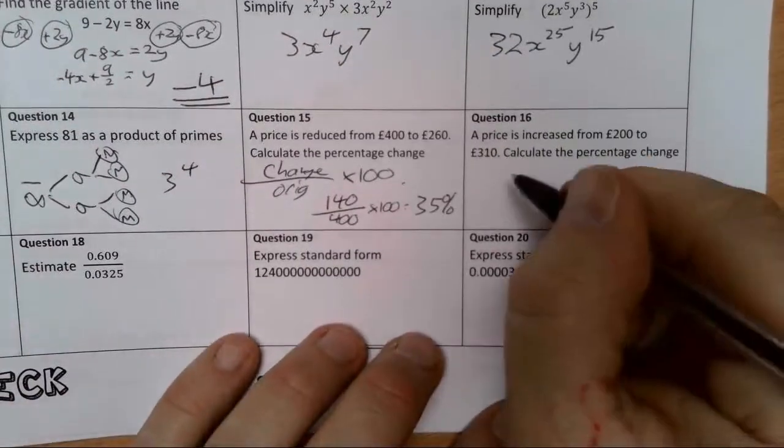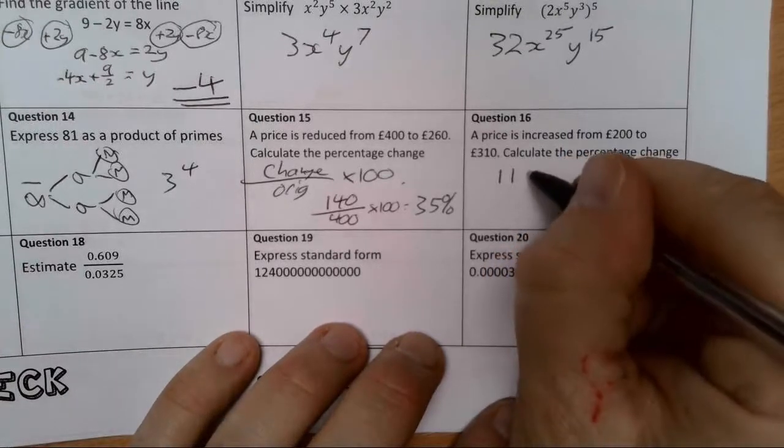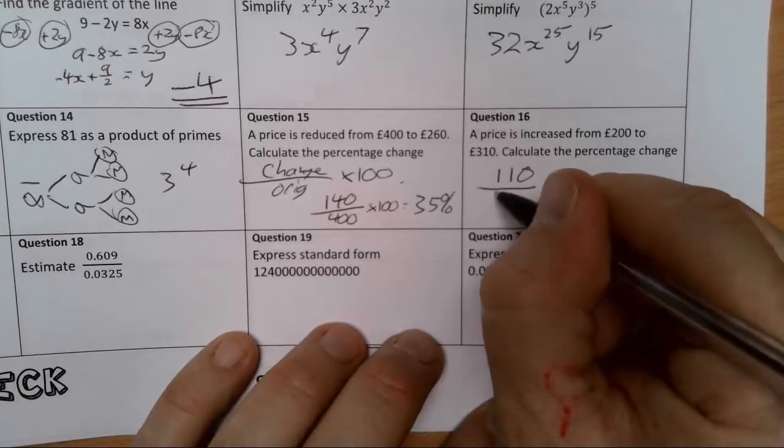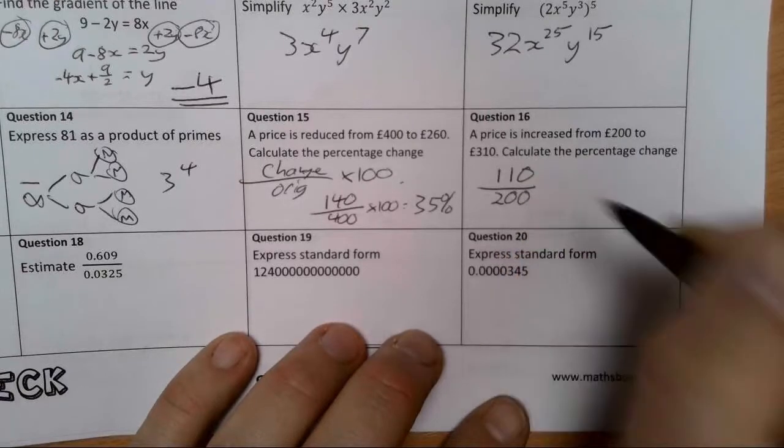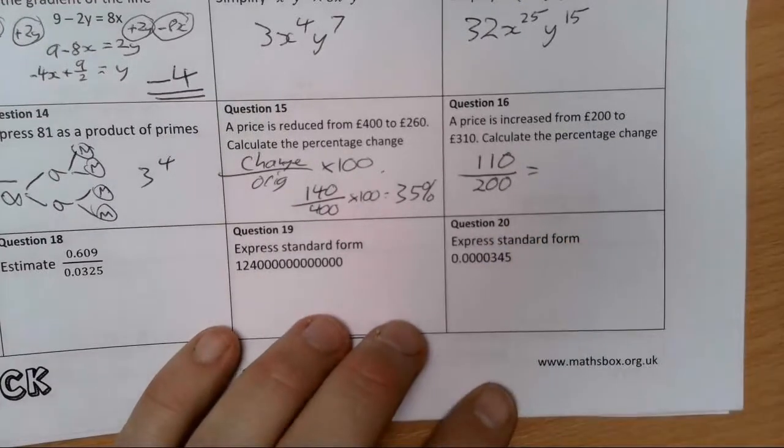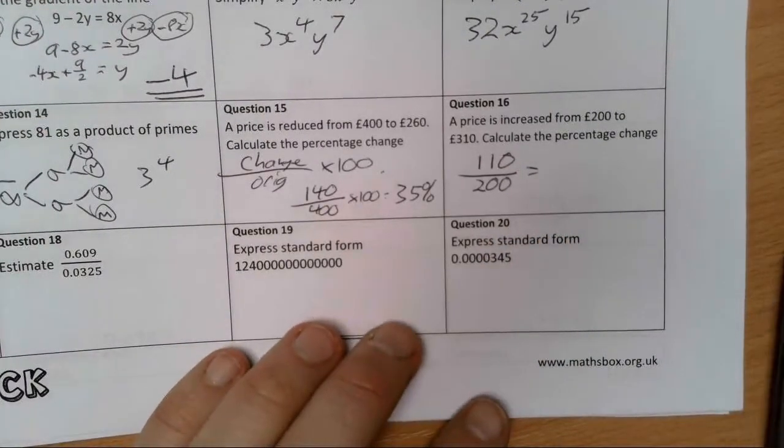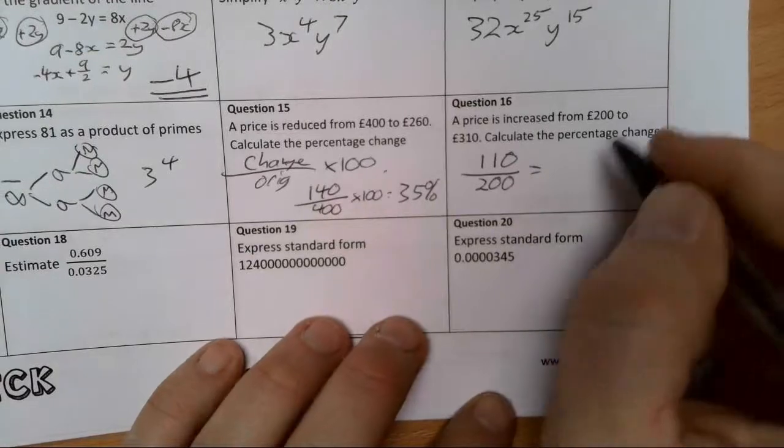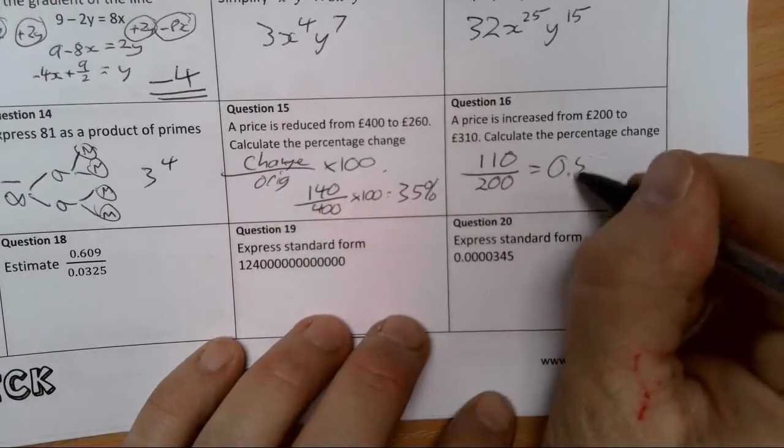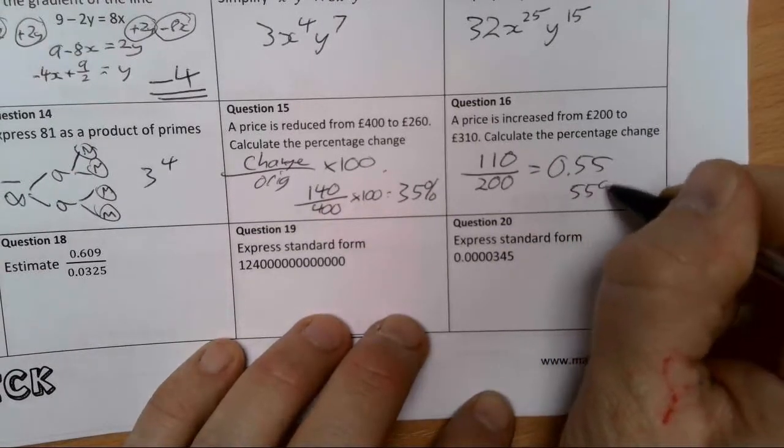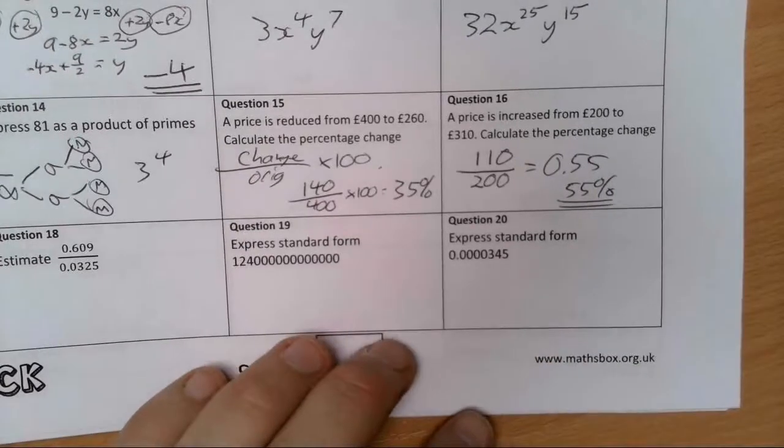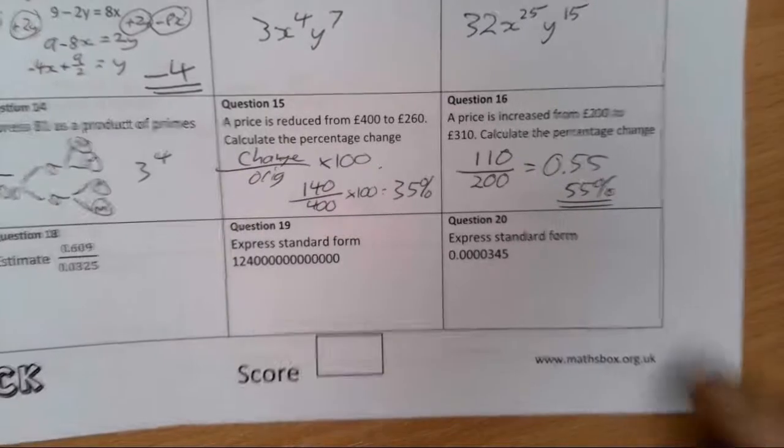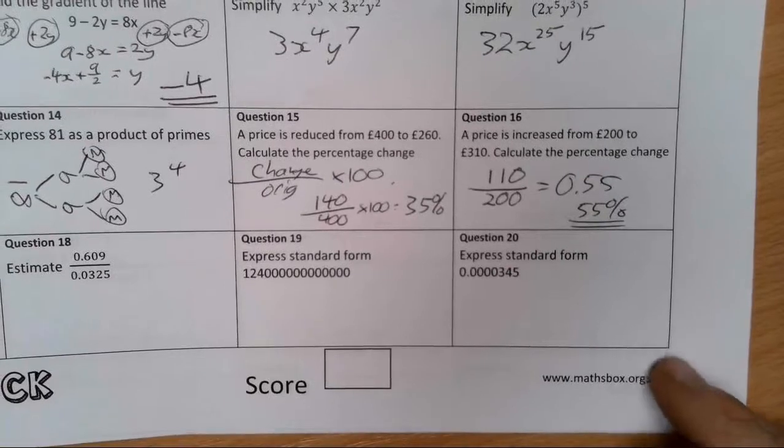£200 to £310, the change is 110 divided by my original amount which is 200. That gives me 11/20 equals 0.55, so that's going to be 55 percent.